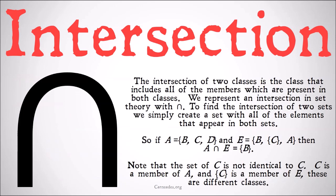The intersection of two classes is the class that includes all of the members which are present in both classes. We represent an intersection in set theory with an upside-down U, because it's in some ways the opposite of a union. To find the intersection of two sets, we simply create a set with all of the elements that appear in both sets.